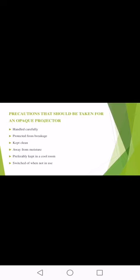The precautions for an opaque projector: it should be handled very carefully and protected from breakage because it uses many mirrors, lenses and prisms. It should be kept clean, away from moisture, mostly kept in a cool room, and switched off when not in use. It should not simply be kept on as the heat produced can really damage the material and cause damage in future also.